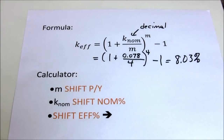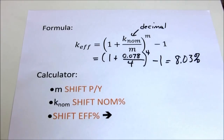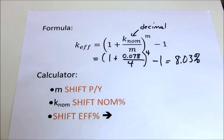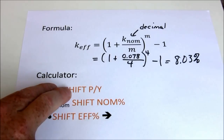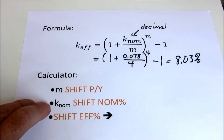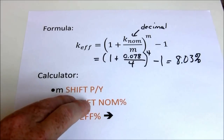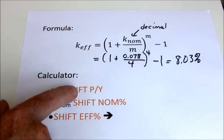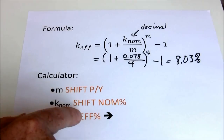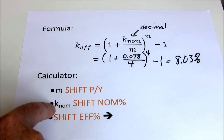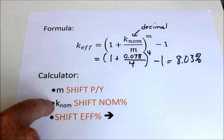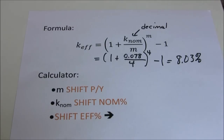Some people prefer formulas, while others want to use their financial calculator's built-in functions. All financial calculators have a function for effective interest rate. For the HP10B2, the process is to put in the number of compounding periods as periods per year, then put in the nominal rate as a nominal percentage — noting these are shift features — and then solve for the effective percentage. Note that here the nominal rate is no longer a decimal; it's entered in percentage terms.